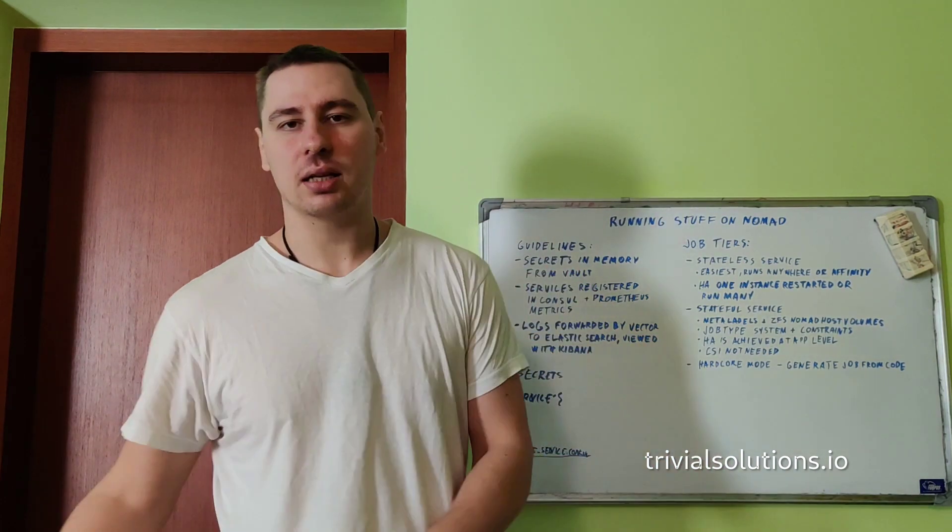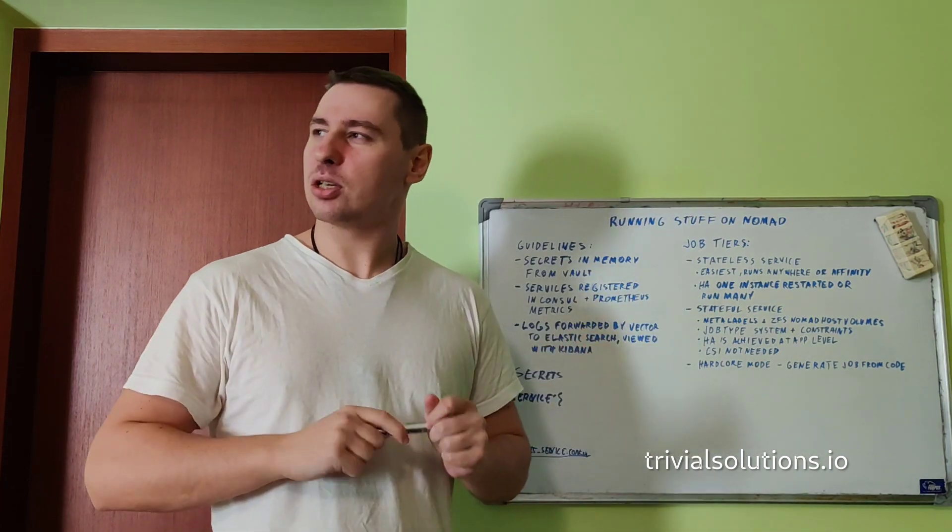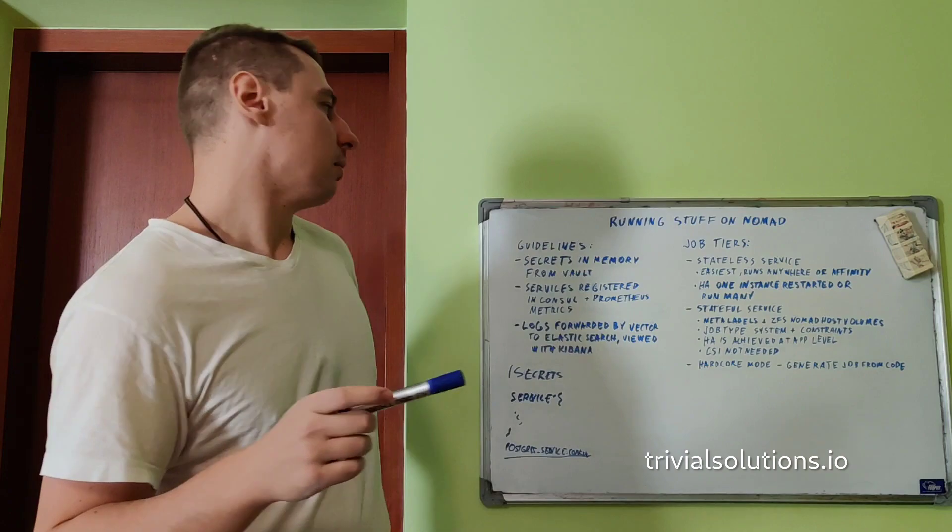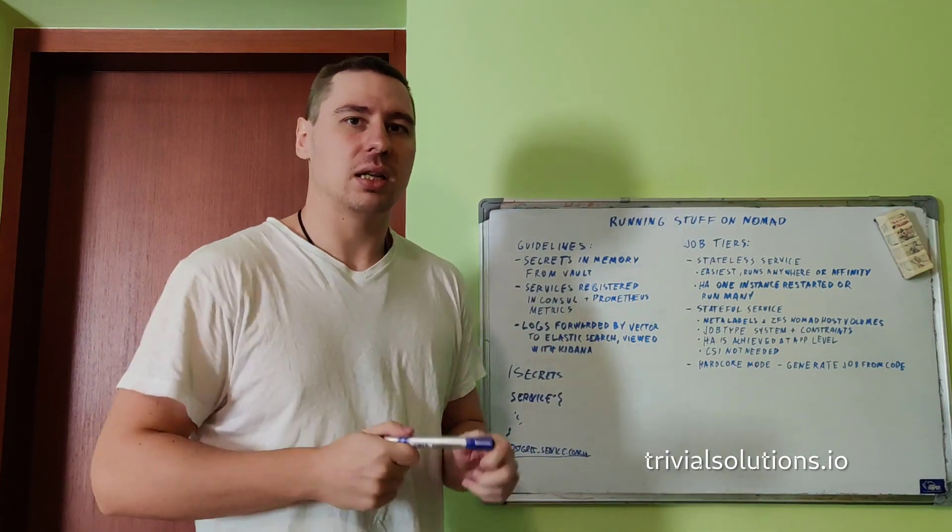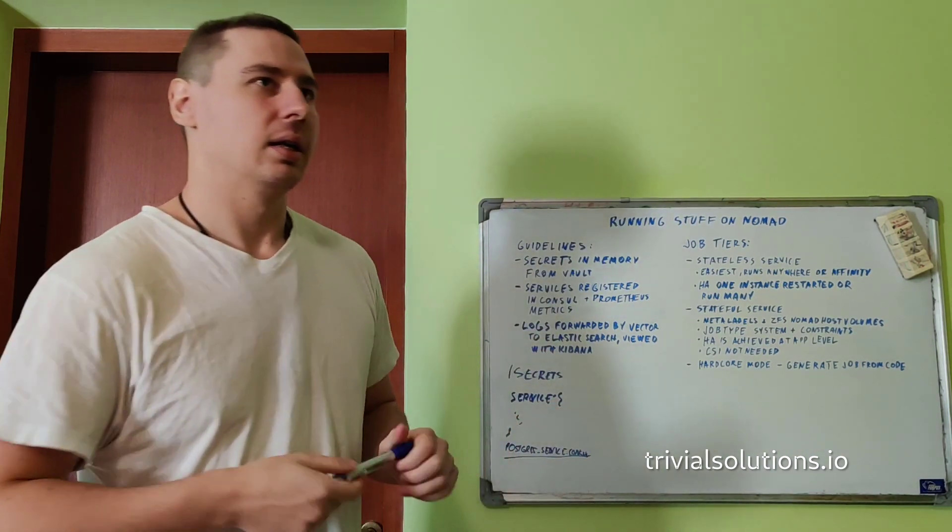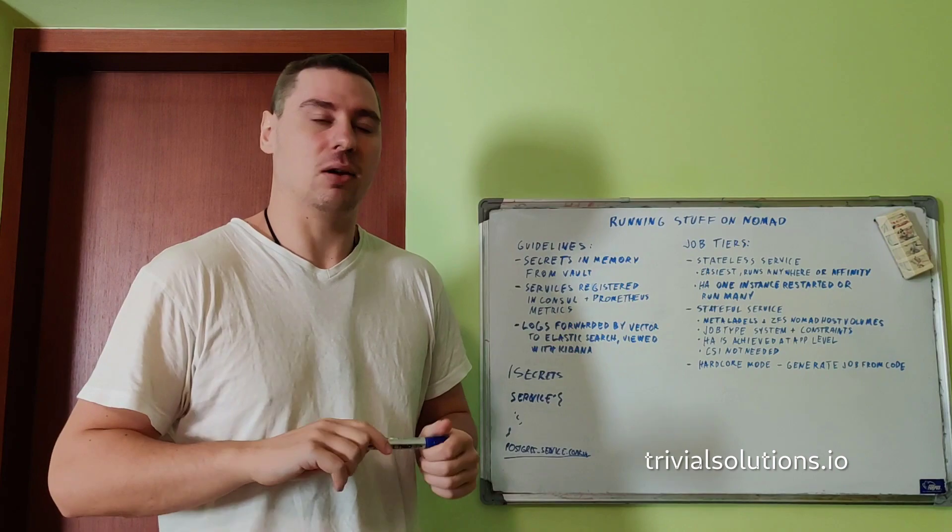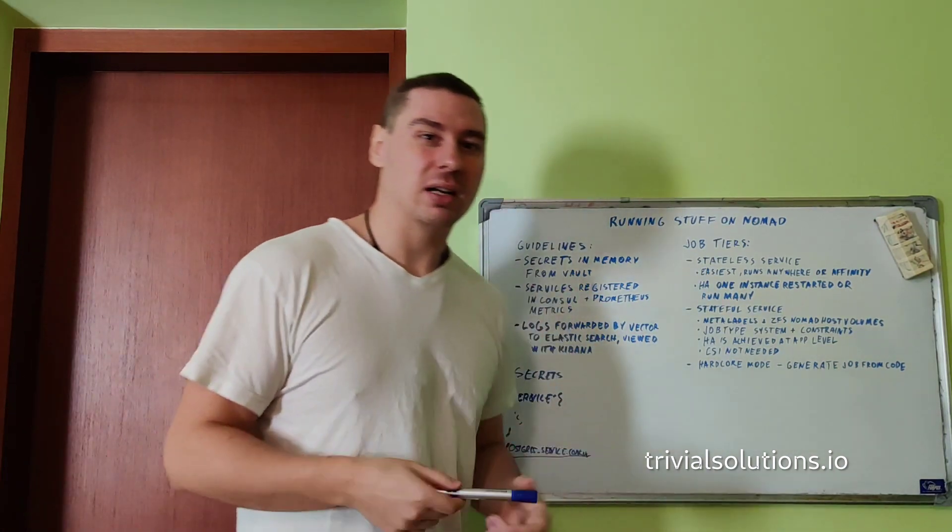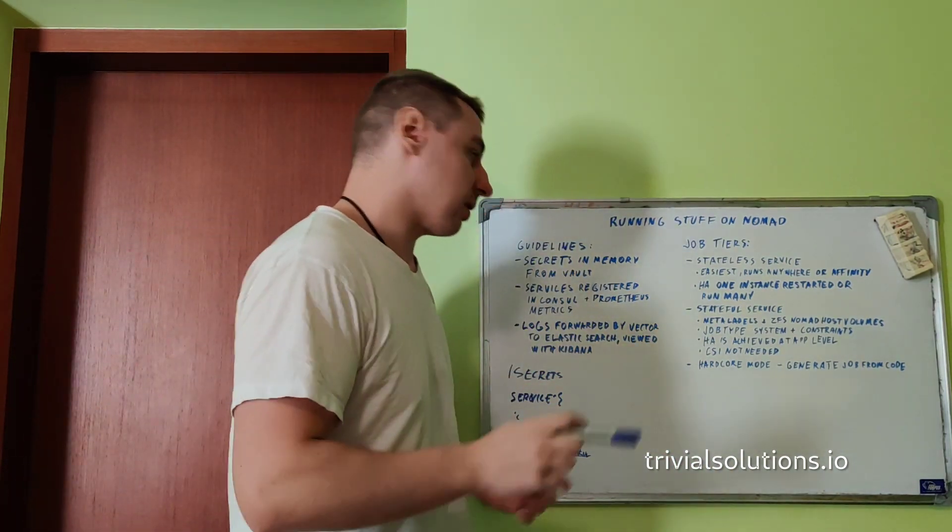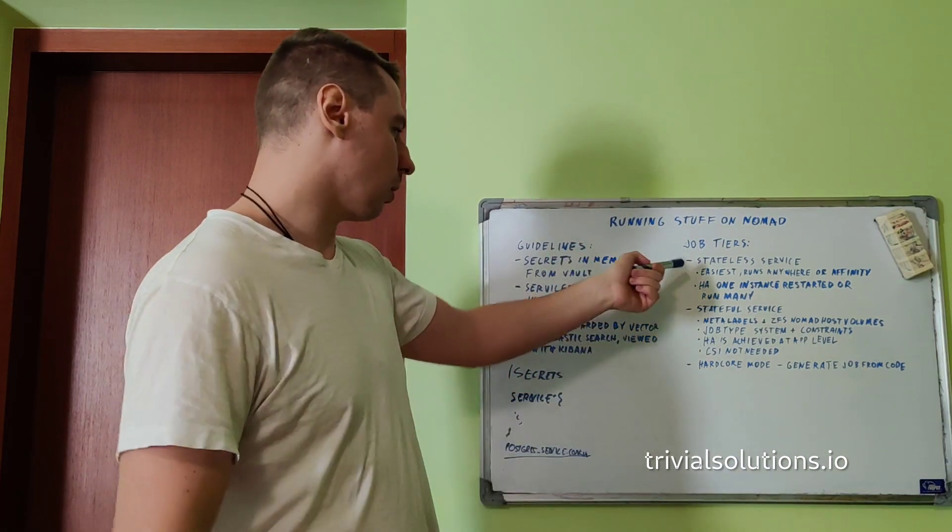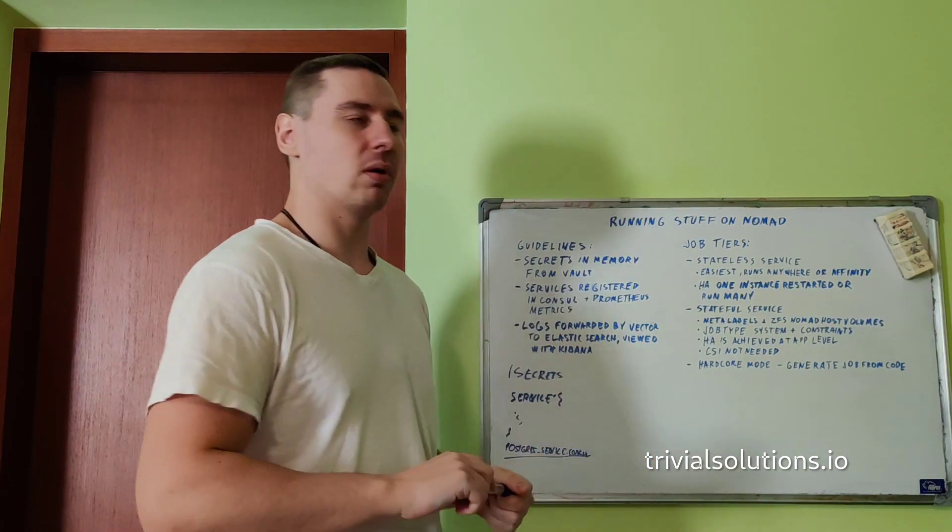Now we'll talk about certain job tiers. What usually happens when you run workloads? What kind of jobs do you run? I'll start from the easiest to the absolute hardest level. You can run pretty much everything you want because, as far as I'm concerned, running a container in a node is not different from a systemd service. You can run pretty much anything you want in Nomad. The easiest one is a stateless service.